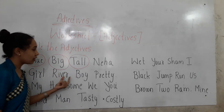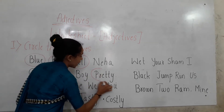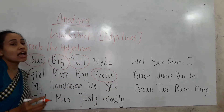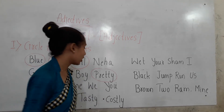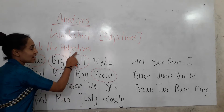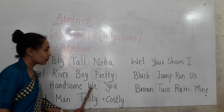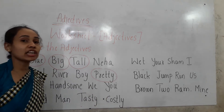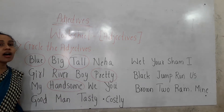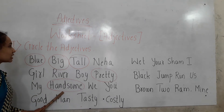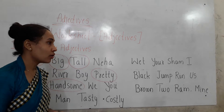Next we have girl, river, boy, pretty. Pretty is an adjective which describes the noun — 'she is a pretty girl,' so pretty is describing the girl. Then we have my, handsome, we, you. Handsome is the adjective here, which describes a noun.